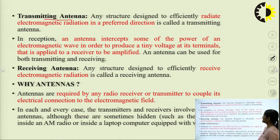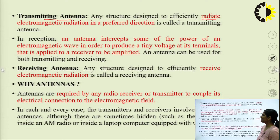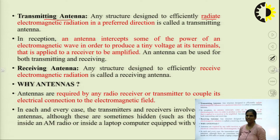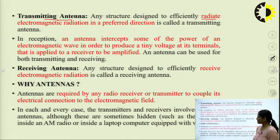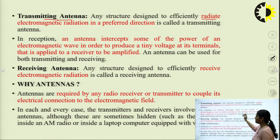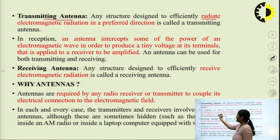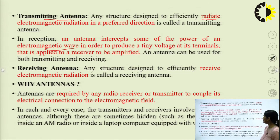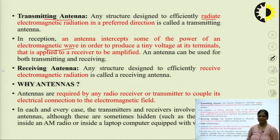Any structure designed to efficiently radiate electromagnetic radiation in a preferred direction is known as a transmitting antenna. In reception, the antenna intercepts some of the power of the electromagnetic wave in order to produce a voltage at the terminal that is applied to the receiver.